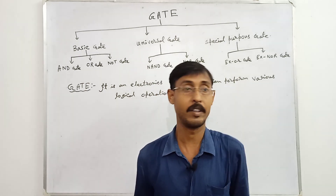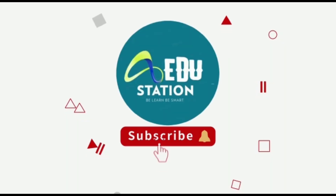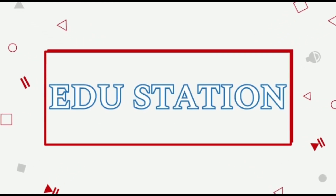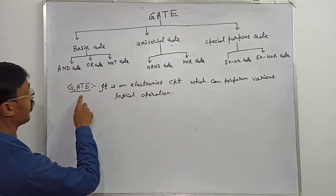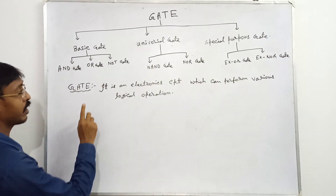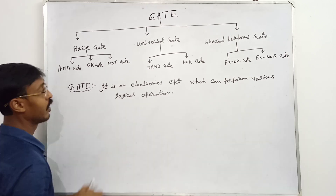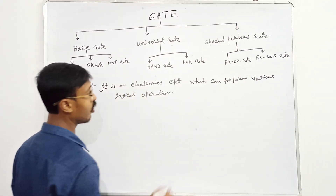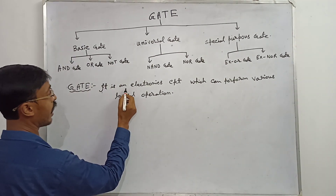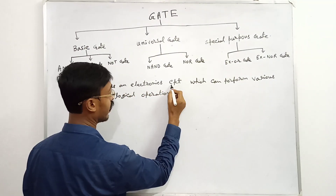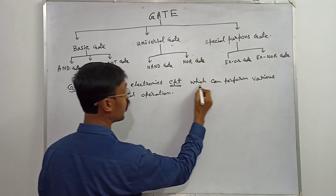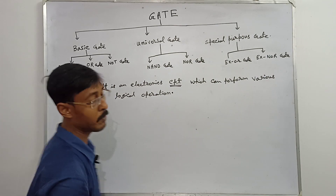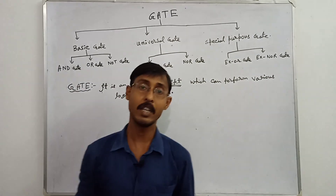What do you mean by gate? Gate means it is an electronic circuit which can perform various logical operations. This is the circuit which can perform various logical operations. That means we are going to study gate for electronics.